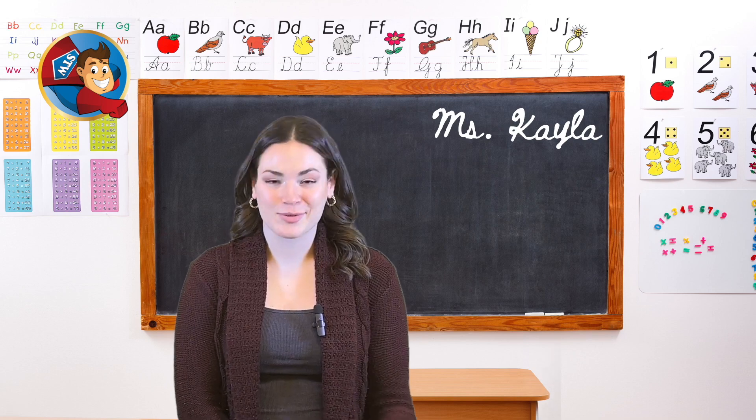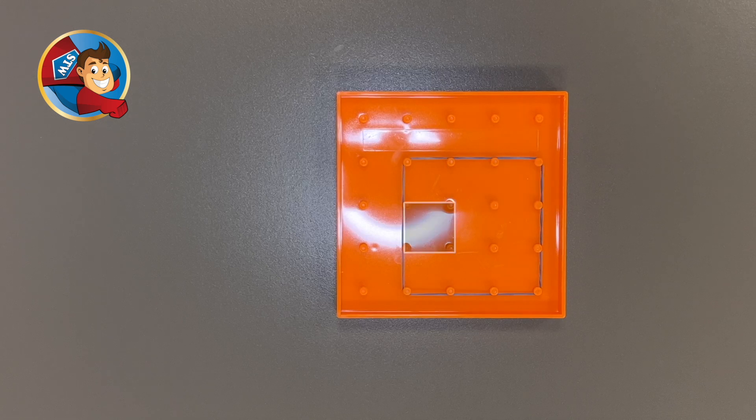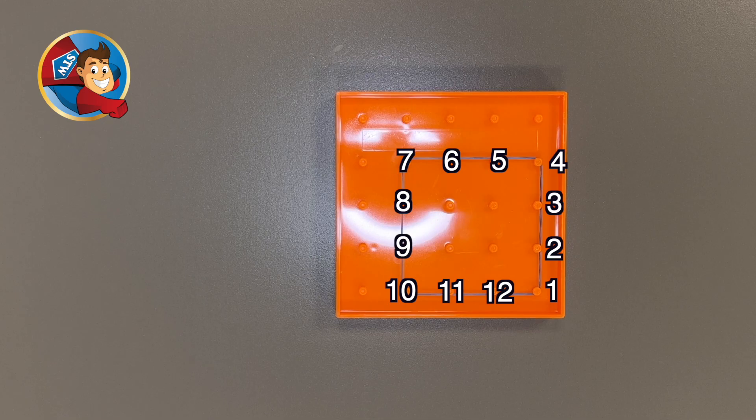Let's start with something simple like a square. We'll use our rubber bands to outline the square on the geoboard, and then we'll count the squares inside to find the area. Then we'll count the pegs around the outside to find the perimeter.